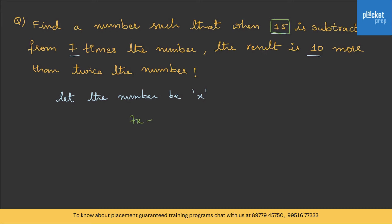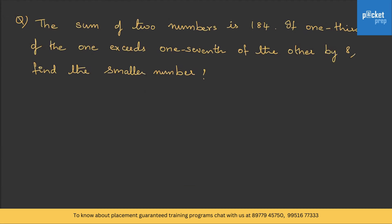15 is subtracted, so we write 7x minus 15. This equals the result, which is 10 more than twice the number — twice the number is 2x, and 10 more means we add 10. So the equation is 7x - 15 = 2x + 10. Solving this, 5x = 25, and x = 5. That's the answer. Let's do one more question.